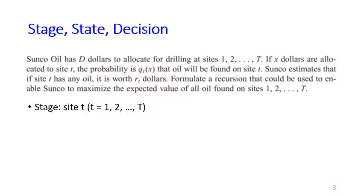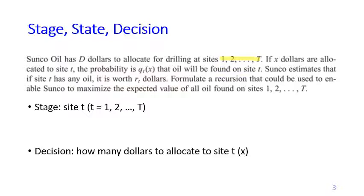The stage is quite obvious: 1, 2, up to big T. And the decision is also quite obvious — how many dollars you would like to allocate to site T. This is denoted by X here.